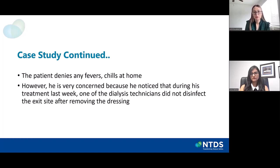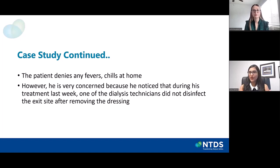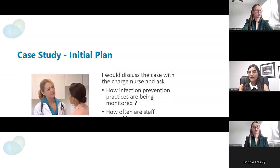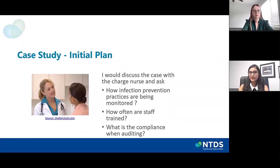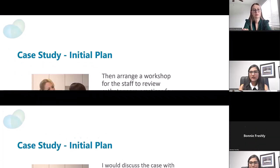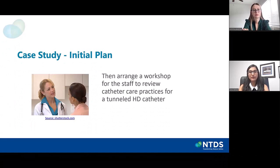What would be the next steps? Because the patient has brought up that there might have been a breach in how the access was handled, I would talk to the charge nurse about it. I would ask them how infection prevention practices are being monitored, how often staff are trained in infection prevention practices, and how compliance is being audited — because we need to retrain people and give them feedback on whether guidelines are being followed. It might be prudent to do a workshop to review catheter care practices in the dialysis unit.